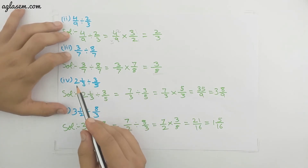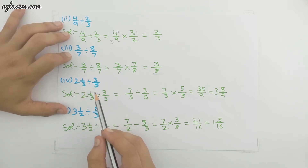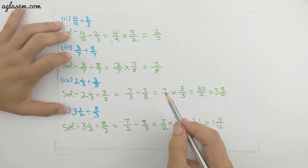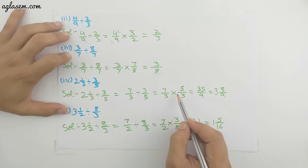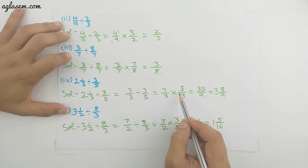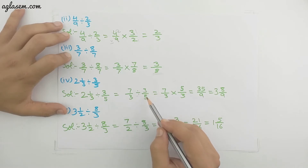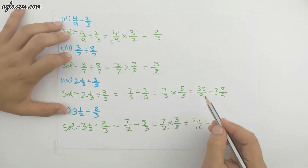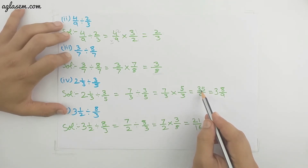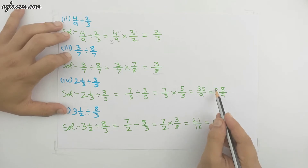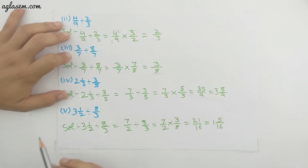Fourth part: 2 whole 1/3 divided by 3/5. The mixed fraction 2 whole 1/3 changes to 7/3. Dividing 7/3 by 3/5 becomes 7/3 multiplied by 5/3. Multiplying gives 35/9, which is an improper fraction. We change it to the mixed fraction 3 whole 8/9.